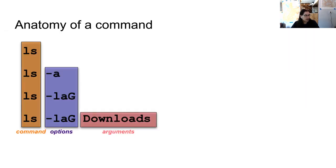I just want to take a quick minute to talk about the anatomy of a command. When we look at the command ls, which lists the contents of a directory, we can either provide that on its own, or we could provide some options to it. You would do that by specifying either a single dash or a double dash, depending on the command and the option you're providing. Those options are going to change the behavior of that command in some way. Some commands may also take an argument, which is effectively something you're providing as input to that command.